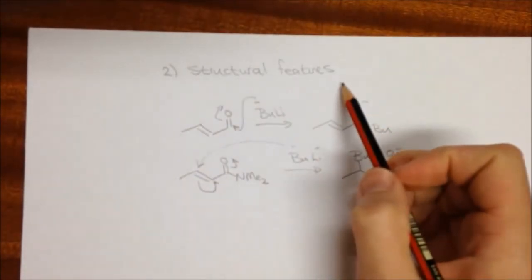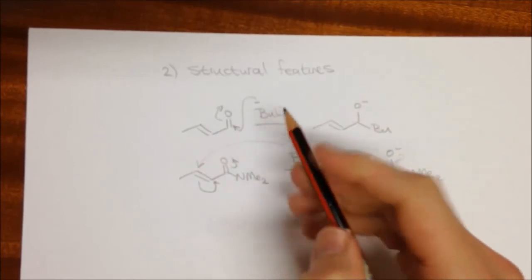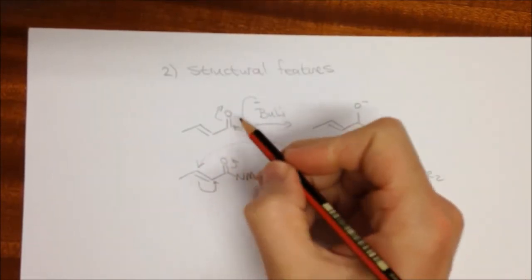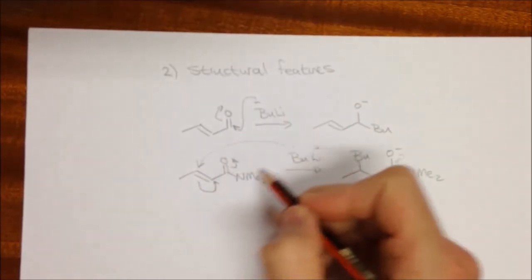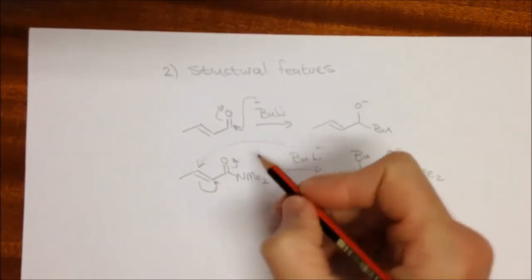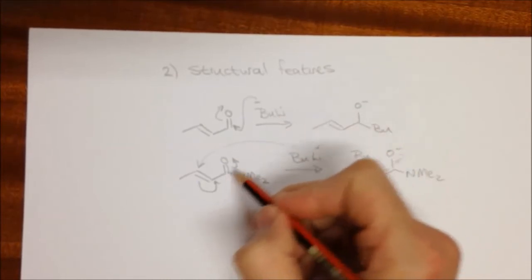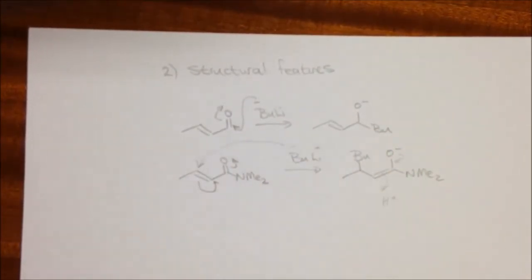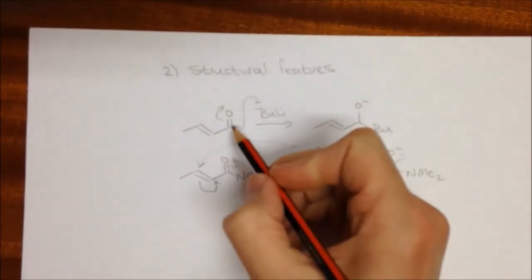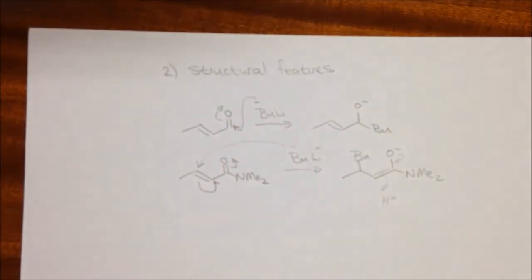So structural features are important as well in this. The more reactive the carbonyl group, the more likely you get a 1,2 addition, the less reactive, then we're going to get the 1,4 addition. So amides and esters are less reactive than your ketone and your aldehyde.